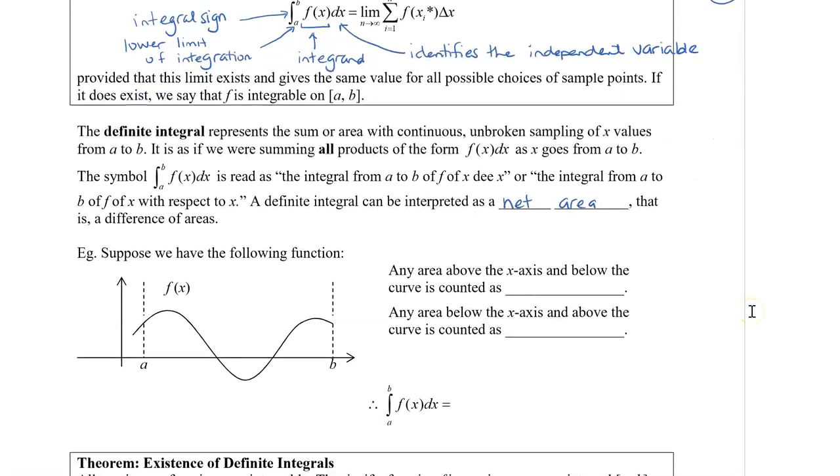So just as a very simplified geometric example, suppose we have the following function. And the area under the curve would be this part here. So it's always between the curve and the x axis. But we can also have the area below the x axis up to the curve. So any area above the x axis but below the curve is counted as positive. And any area below the x axis and above the curve is counted as negative.